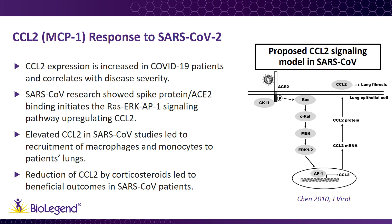In these patients, reduction of CCL2 levels through treatment with corticosteroids had beneficial outcomes. Conversely, high levels of CCL2 in serum correlated with more advanced SARS. It is easy to imagine a similar response to SARS-CoV-2, whereby virus binding initiates a cascade resulting in CCL2 upregulation. In turn, increased CCL2 expression is responsible for recruitment of monocytes and macrophages, resulting in the high levels of inflammation and cytokine storm characteristic of COVID-19.